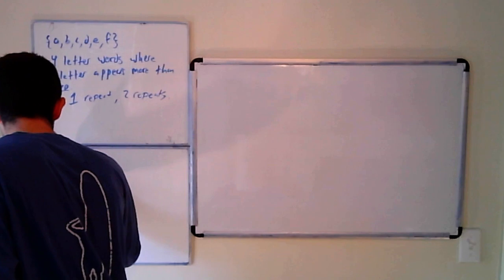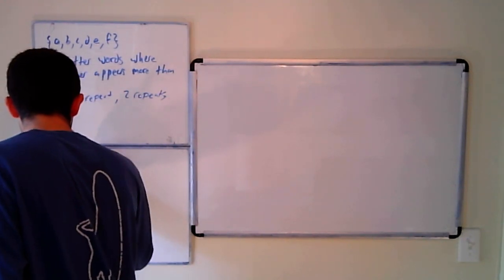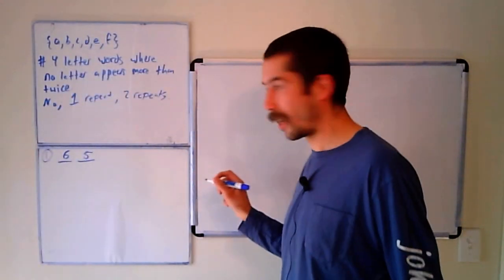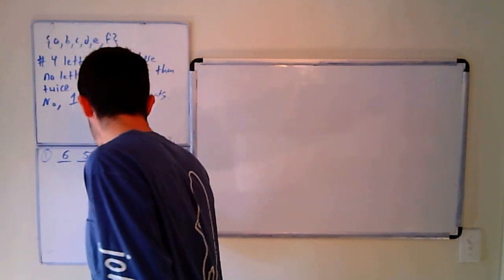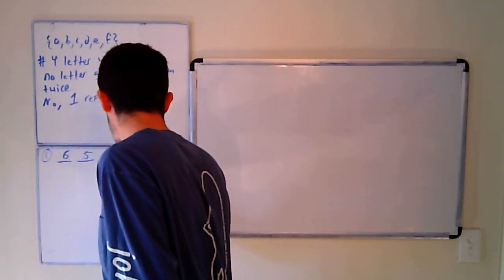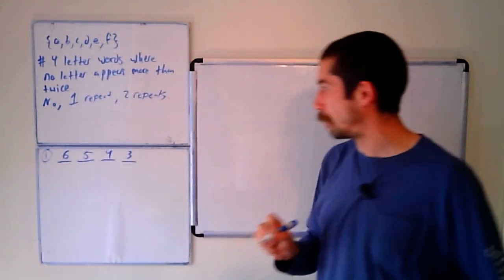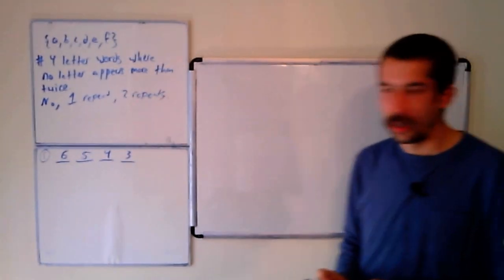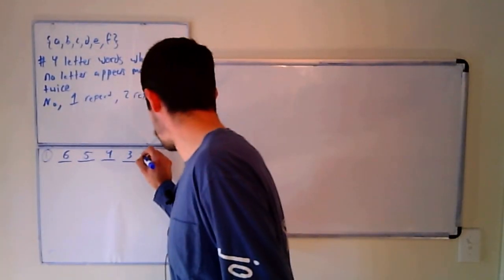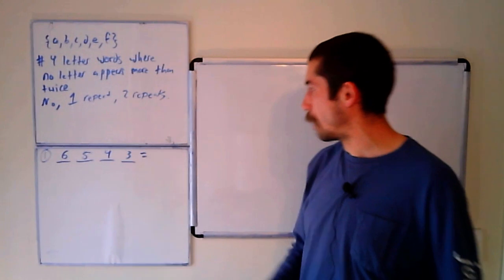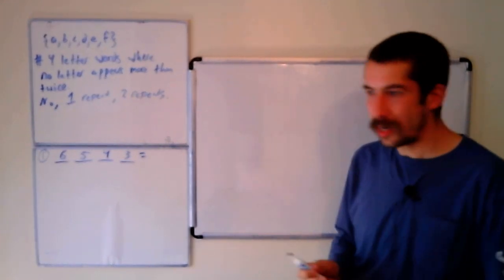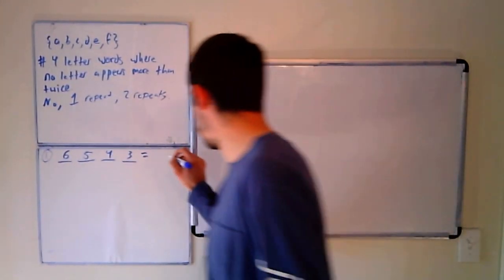Well, there's six options for the first location, five options for the second location, four options for the third location, and three options for the last location. So the total is this product, six times five times four times three, which works out to be 360.